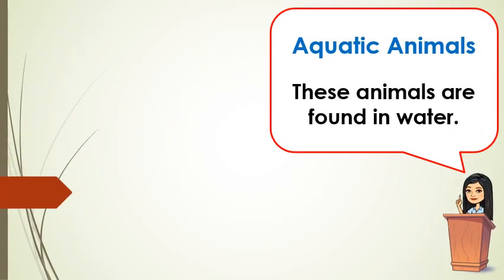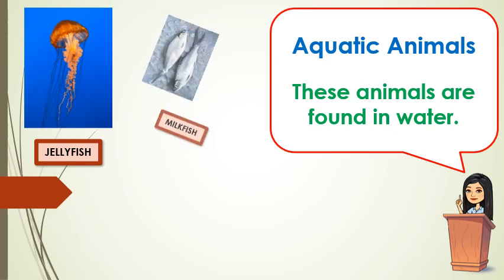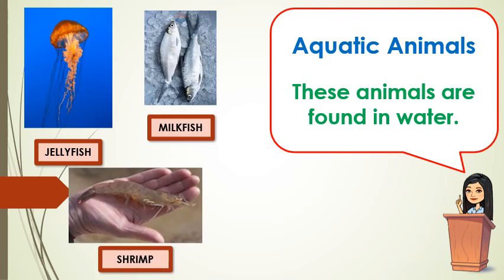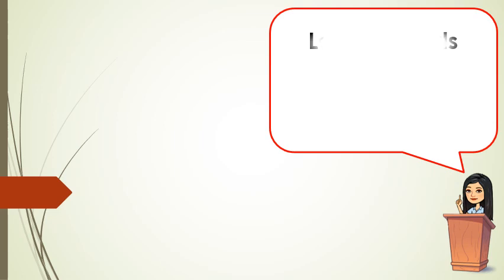Next, we have the aquatic animals. These animals are found or live in the water. Examples of these are jellyfish, milkfish, shrimp, and octopus. Can you name other aquatic animals?